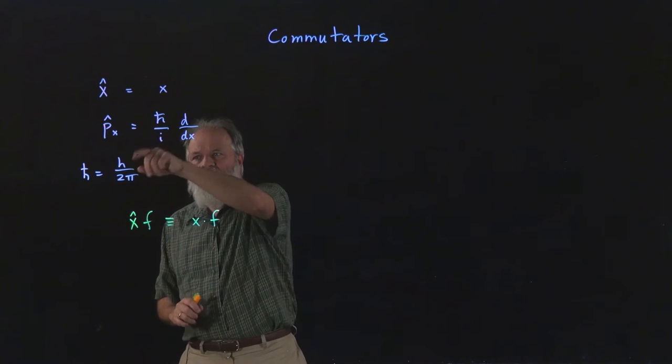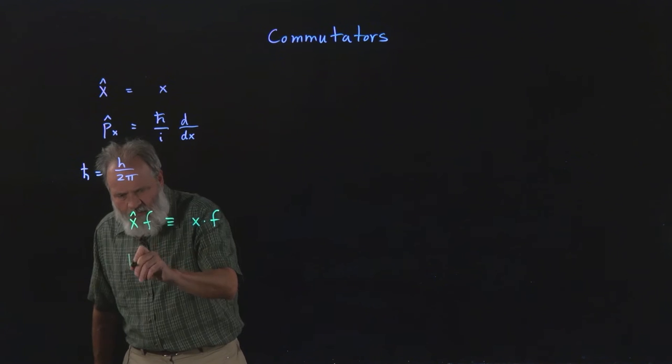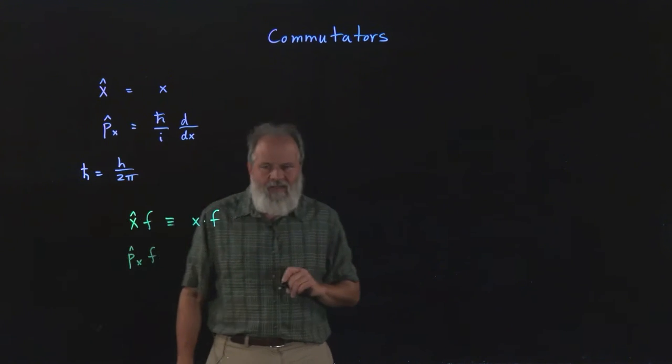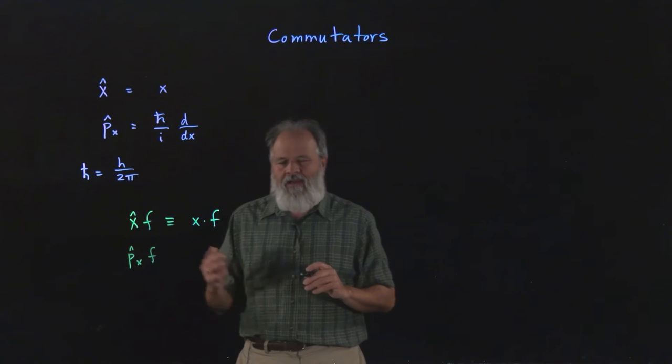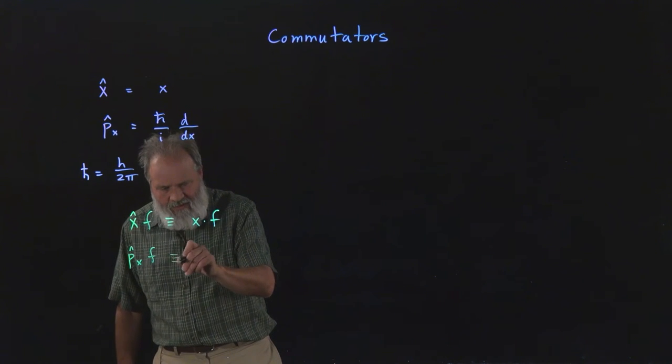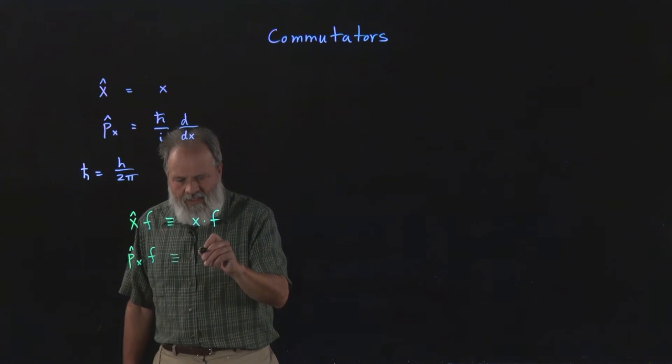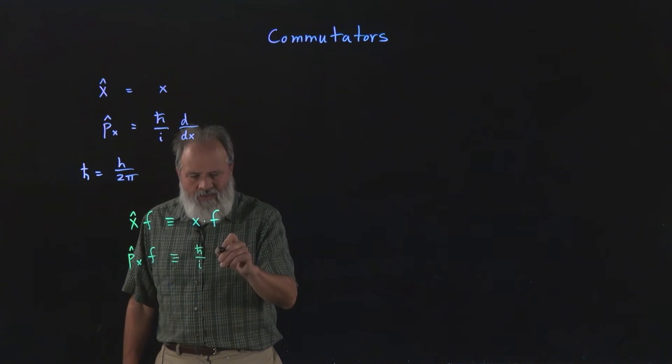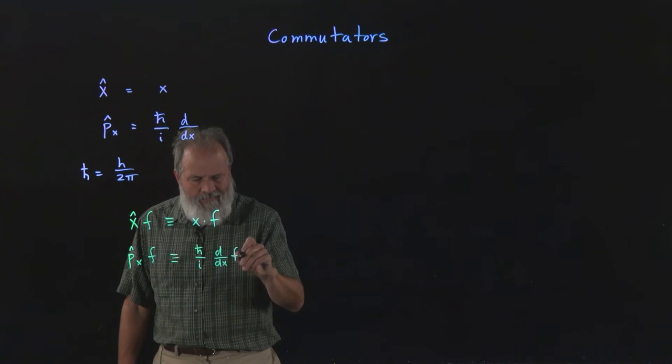So let's do this. We always put the operator on the left side of the function we're operating on, and it can go the other way but that involves a lot more math than we need to go into. So what this means is literally you put h bar over i, which is just a couple of constants, times the derivative of f.